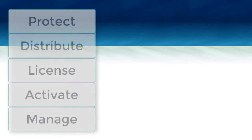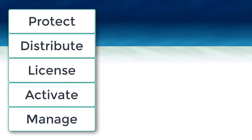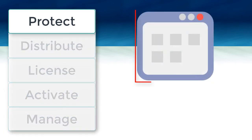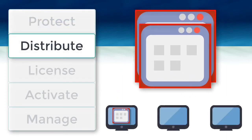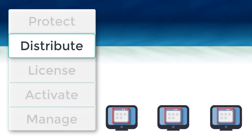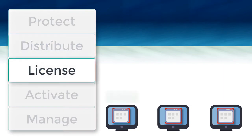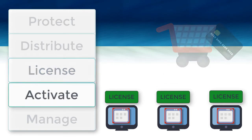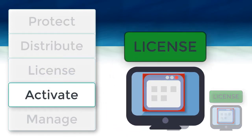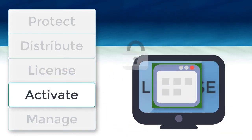Here are the high-level steps to license your software. The ACSL wizard is used to apply the licensing functionality to your application. The protected application is distributed to your customers. Customers can receive a license from you or purchase a license online at any time. Customers use the license to immediately activate the software and lock it to their computer.